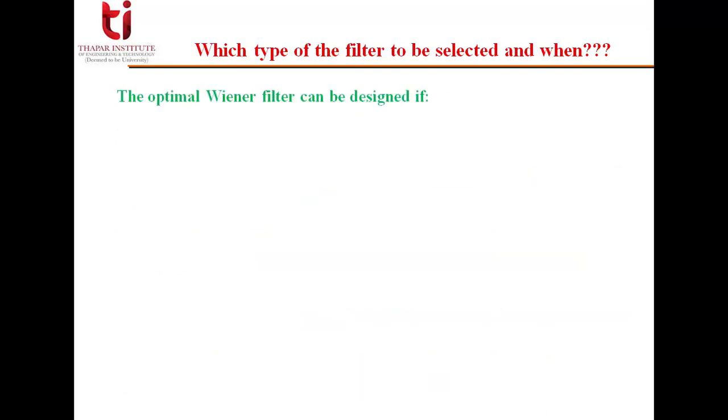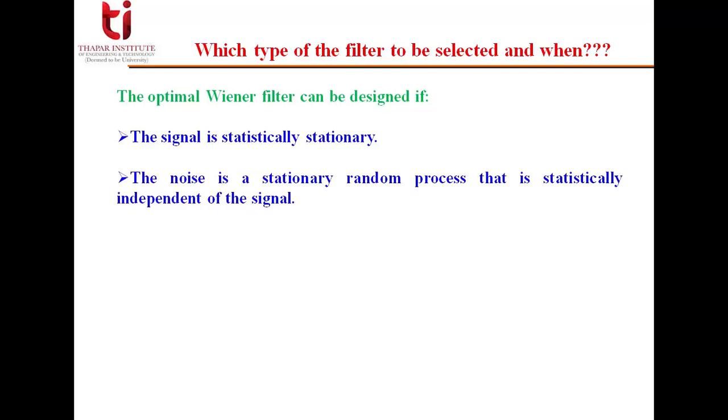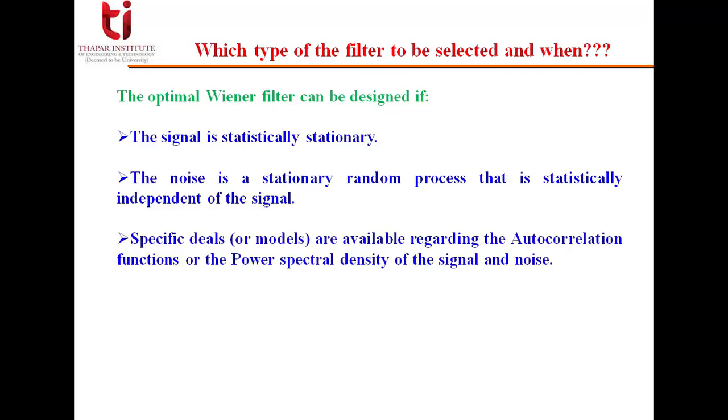Now optimal Wiener filter can be designed if the signal is again statistically stationary. So this is the foremost requirement. The noise is a stationary random process and it is statistically independent of the signal. Specific details or models are available regarding the autocorrelation function or the power spectral density of the signal and the noise.